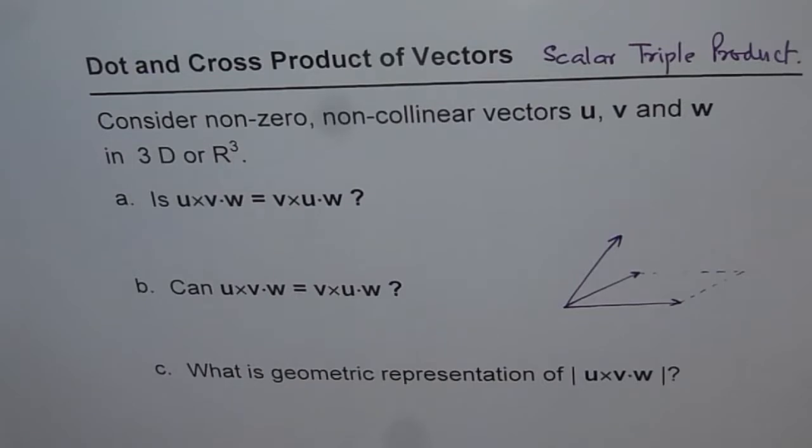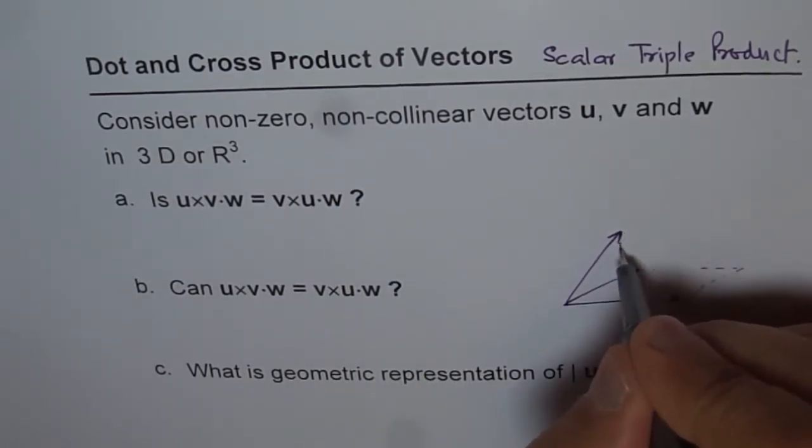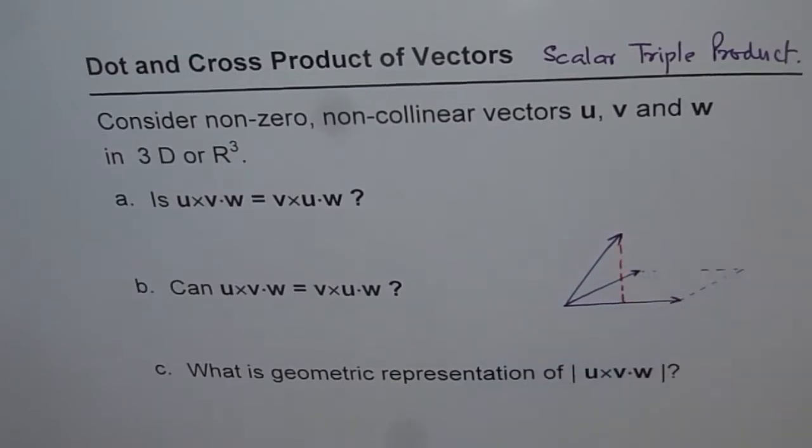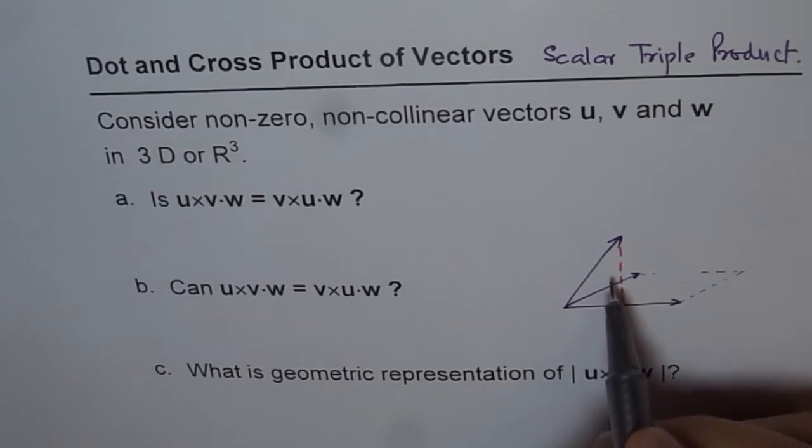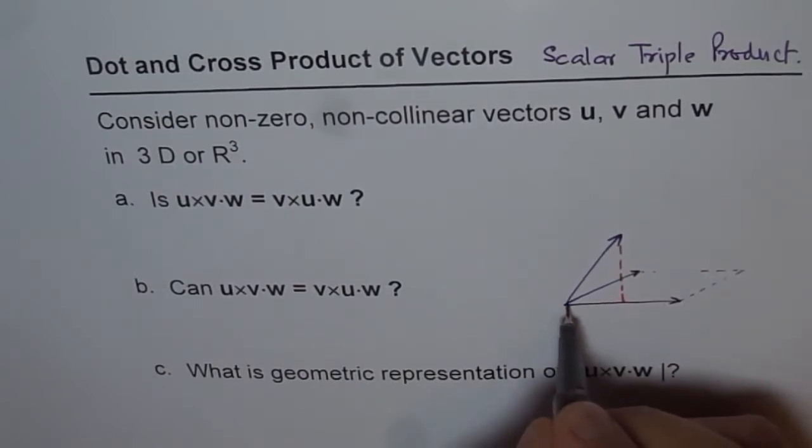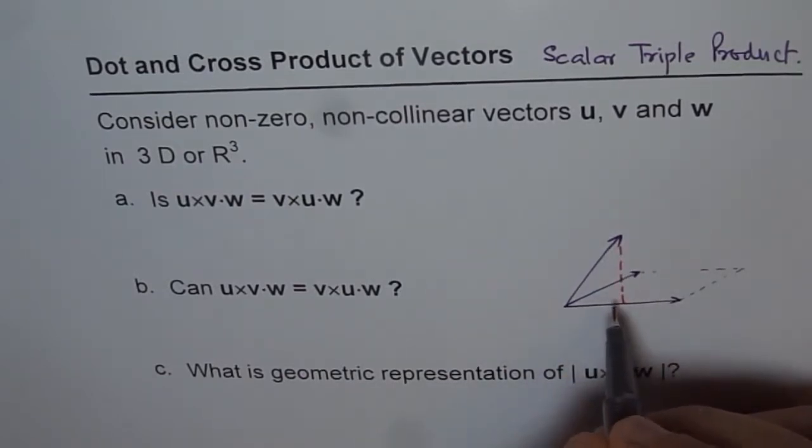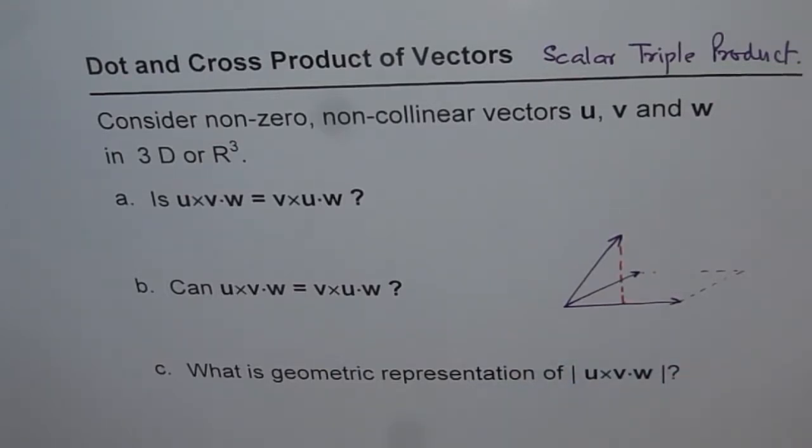Now, if I do dot product with w, then what am I trying to do? Then I am actually multiplying this area with this height. Do you understand? Because the dot product is this component, height, between these two vectors and this vector. So basically it is a component along u cross v. Let me just show you again here.